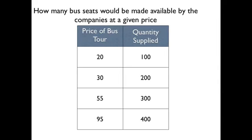We also have a supply schedule. I was asking bus drivers how many buses would show up at different prices. If the price was only $20, only 100 bus seats would be supplied. If the price was $95, then 8 buses would show up for 400 people, making almost $40,000.